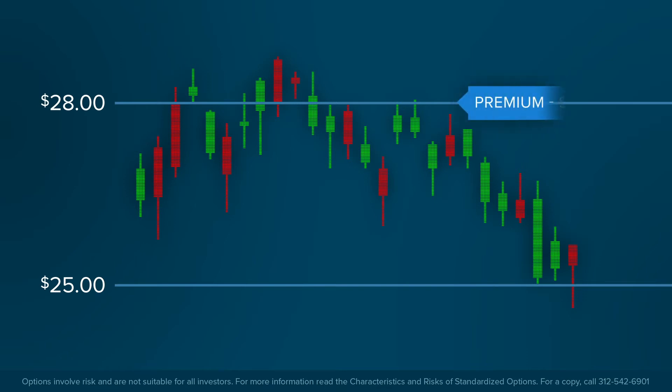In this case, the price of a put option at the $28 strike would be more costly than a put option offering the right to sell at a lower $25 strike.